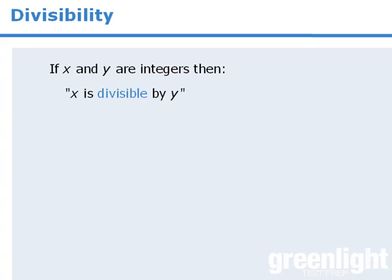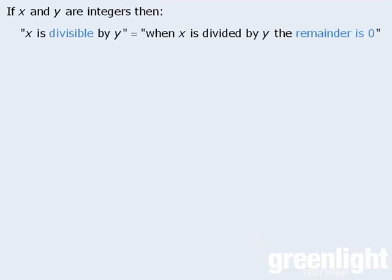So far, we've seen several different ways to express the concept of divisibility. You'll soon find that your ability to solve integer properties questions will depend on your ability to recognize how various statements are all equivalent. For example, if x and y are integers, saying that x is divisible by y is exactly the same as saying when x is divided by y, the remainder is 0.